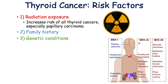MEN2A has three important associated endocrine disorders: medullary thyroid carcinoma, pheochromocytoma, and parathyroid hyperplasia leading to hyperparathyroidism. In MEN2B, we can see medullary thyroid carcinoma, pheochromocytoma, mucosal neuromas, and marfanoid body habitus. If a patient has a family history of some of these other endocrine conditions, they're at an increased risk of medullary thyroid carcinoma.